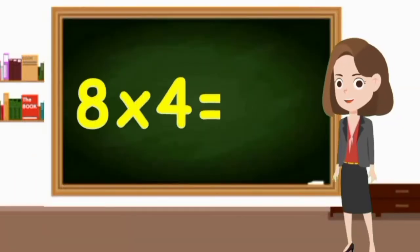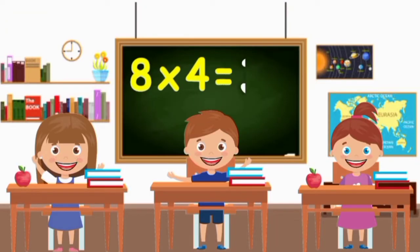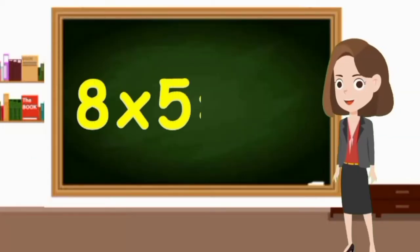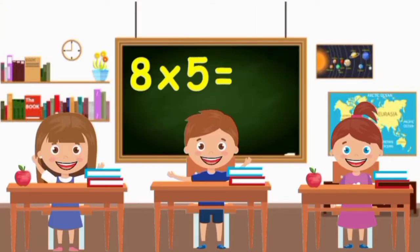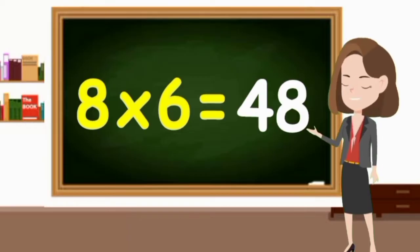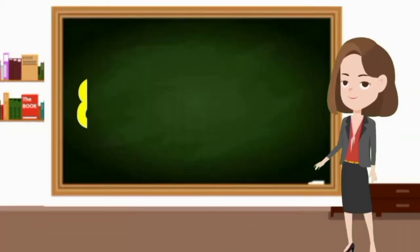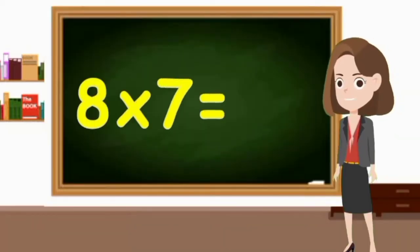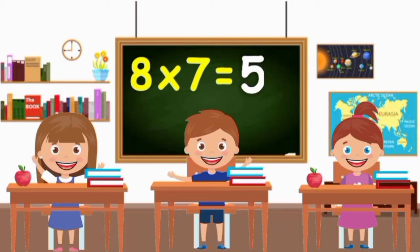Eight threes are twenty-four. Eight fours are thirty-two. Eight fives are forty. Eight sixes are forty-eight.